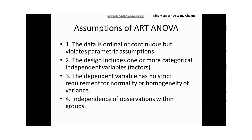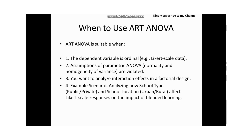What are the assumptions of ART ANOVA? One: the data is ordinal or continuous but violates parametric assumptions. Two: the data includes one or more categorical independent variables called factors. Three: the dependent variable has no strict requirements for normality or homogeneity of variance. Four: independence of observations within groups.